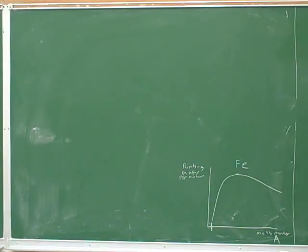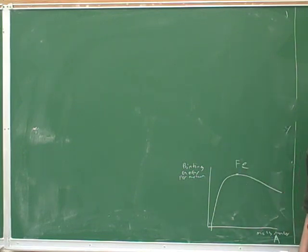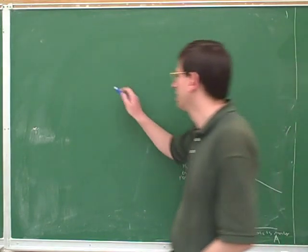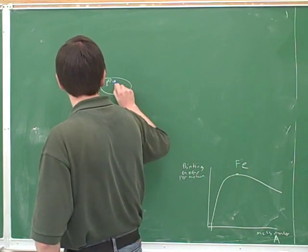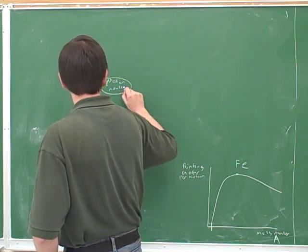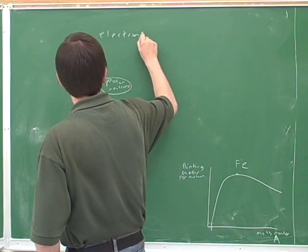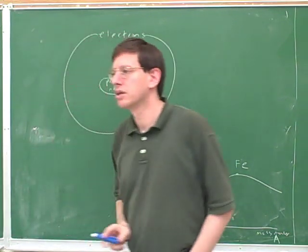Let's make sure we understand the basic ideas. What is an atom made out of? Particles — like protons, neutrons, and electrons. Where are they? The protons and the neutrons are in the nucleus. And where are the electrons? Flying around, or orbiting around.